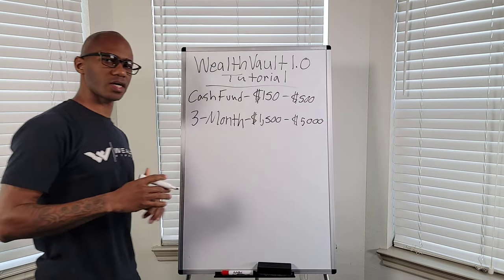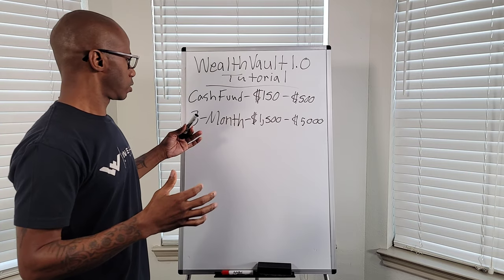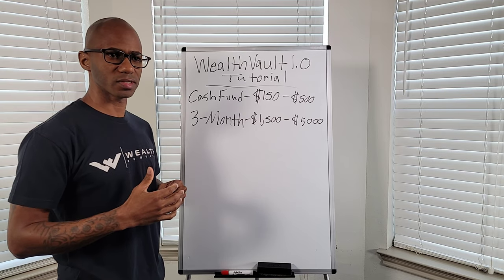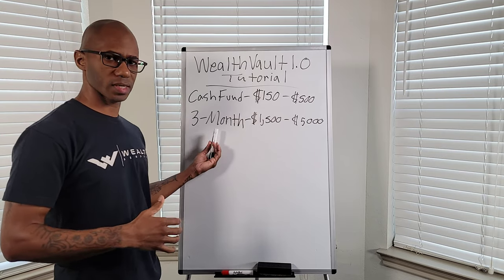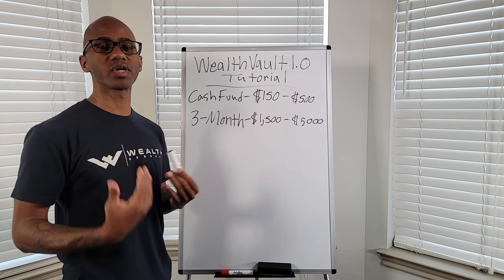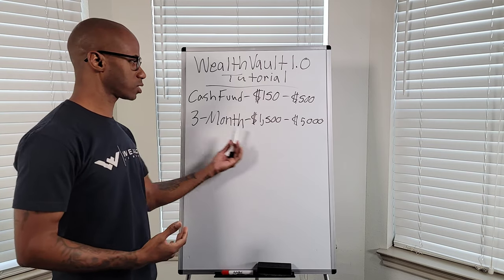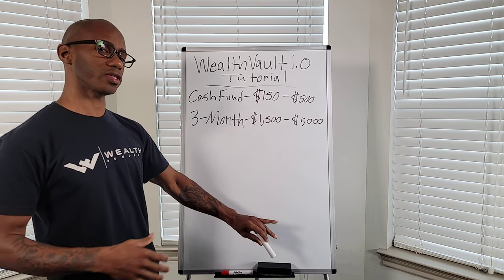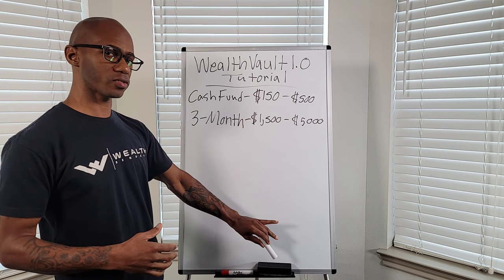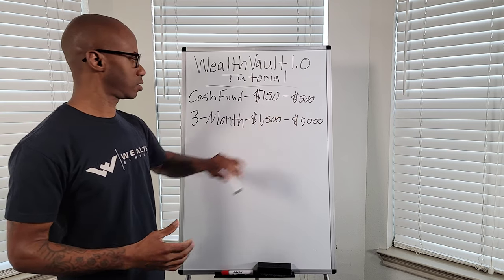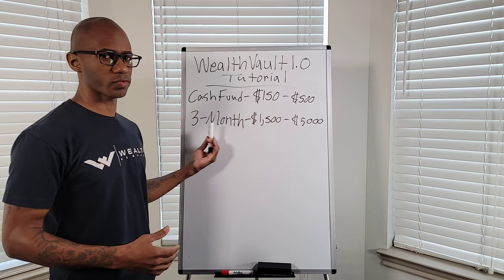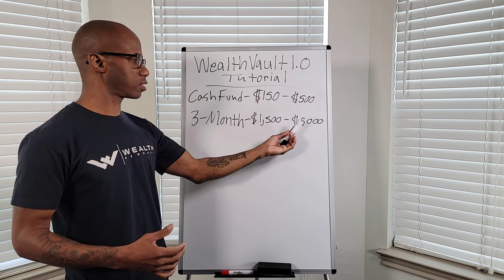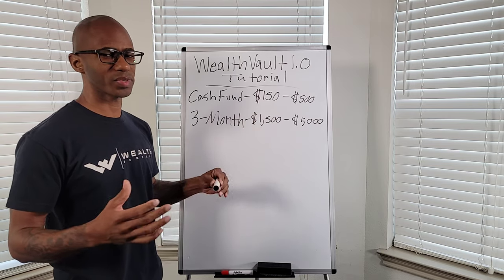The three-month fund consists of $1,500 to $5,000. It's for a medium-size emergency — let's say you get laid off, or you're in the middle of changing careers. The same as the cash fund: you fund the $1,500 first. Once you pay all your debt off with the WealthVault system, then you come back and max it out. This is going to hold you for three months, and $1,500 should be doable.